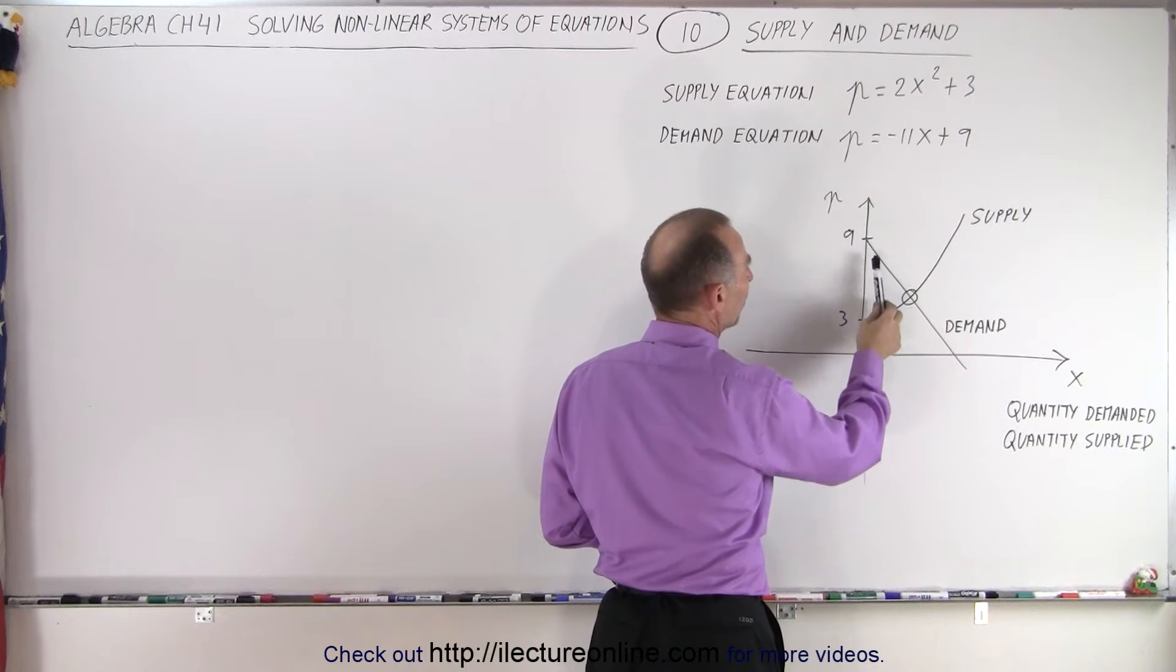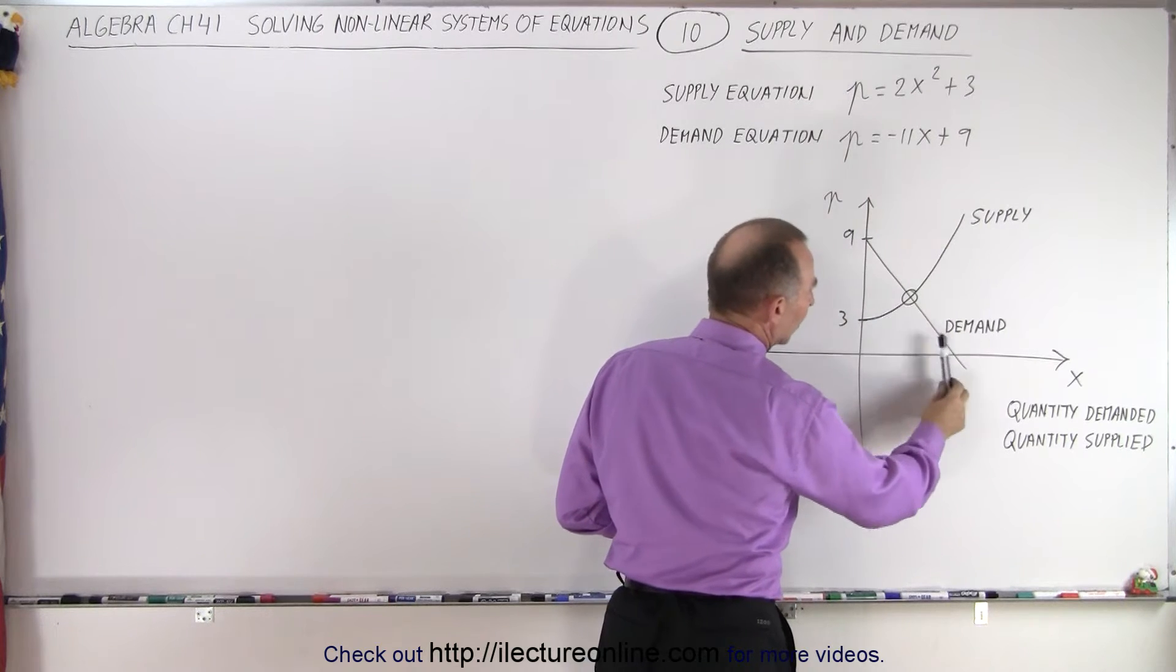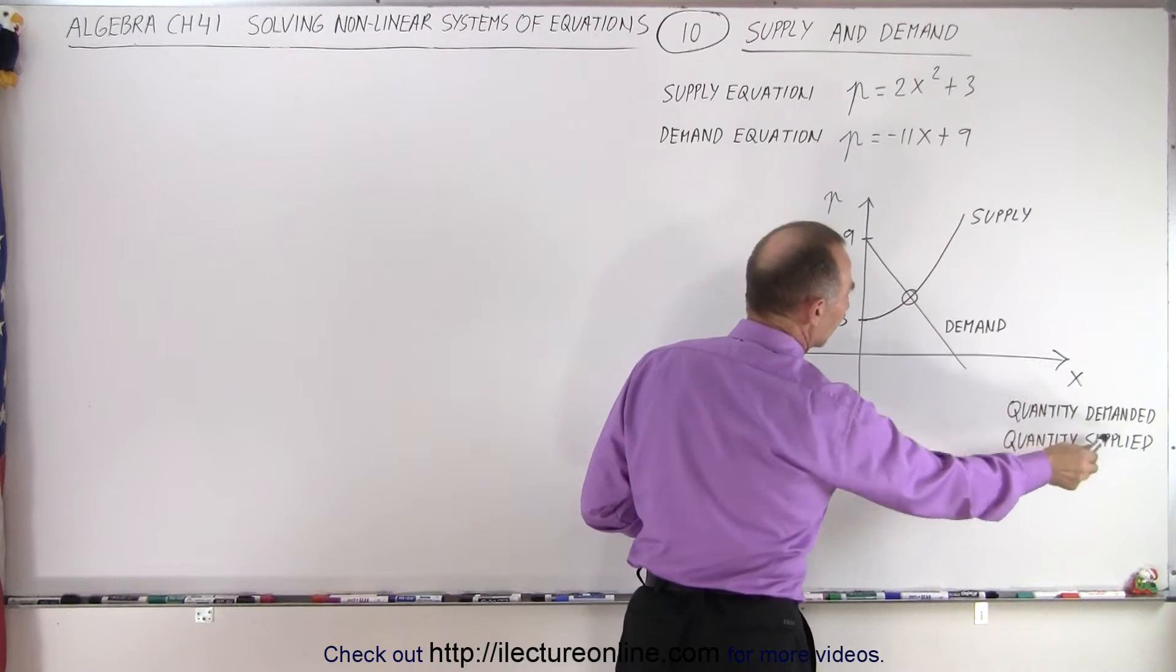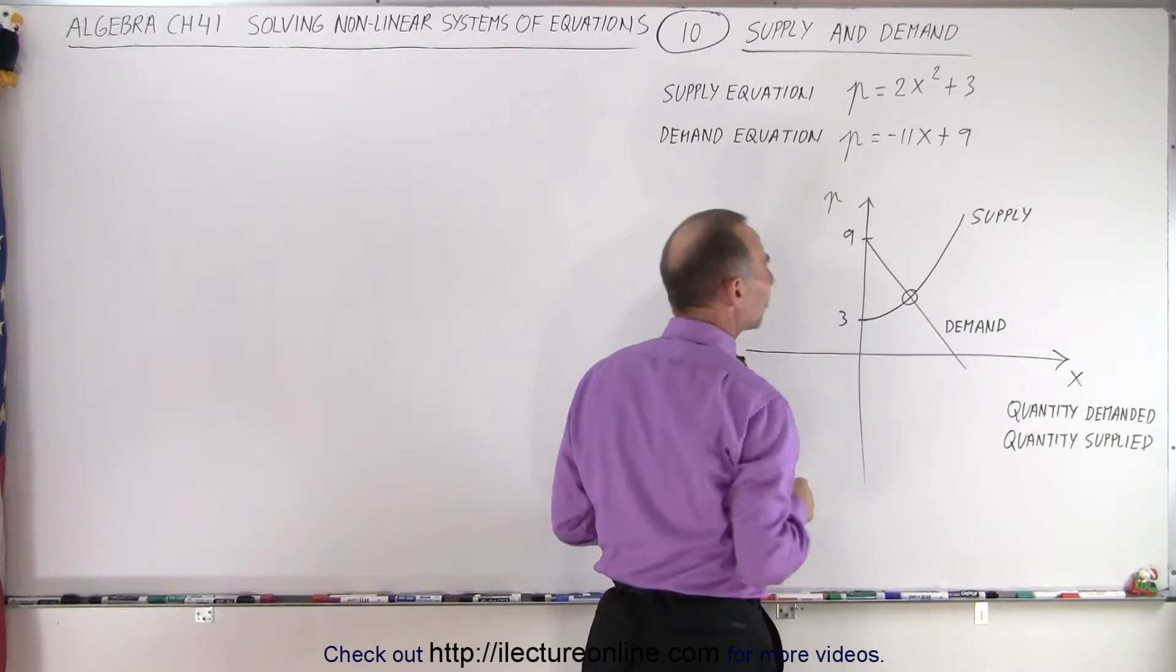And here, the demand equation is the lower the price, the greater the demand. So X represents quantity demanded and quantity supplied, and P represents the price.